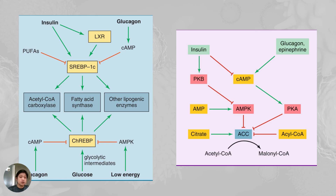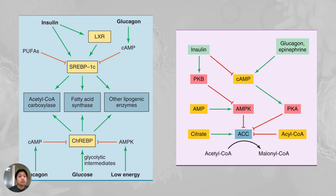In low energy or the fasting state, when glucose levels fall, AMPK — AMP-activated kinase — is stimulated. AMPK inhibits the carbohydrate response element binding protein (ChREBP), which slows down lipogenesis. High levels of AMPK also inhibit ChREBP and slow down acetyl-coenzyme A carboxylase. If you have PUFAs — polyunsaturated fatty acids — those will also slow down lipogenesis.